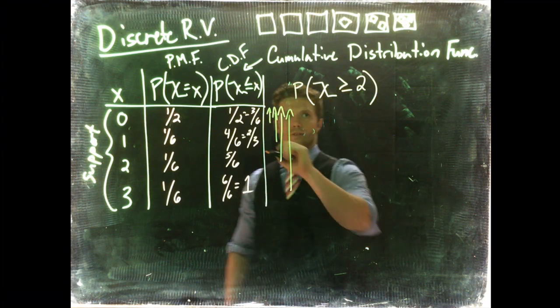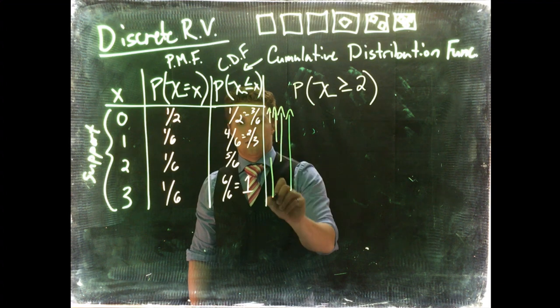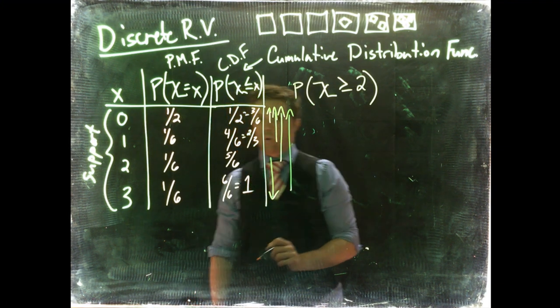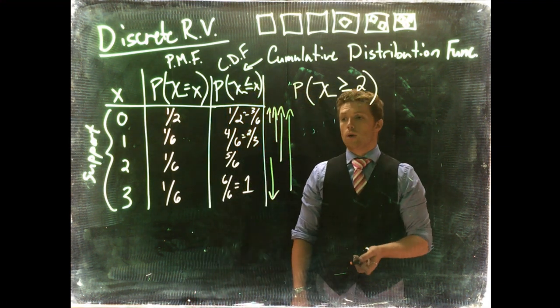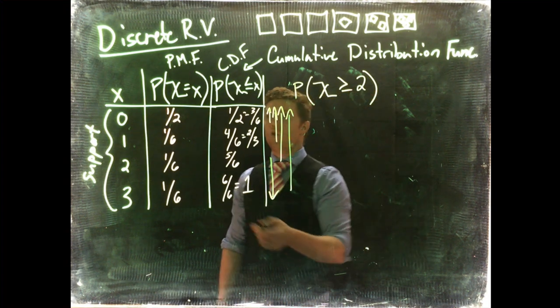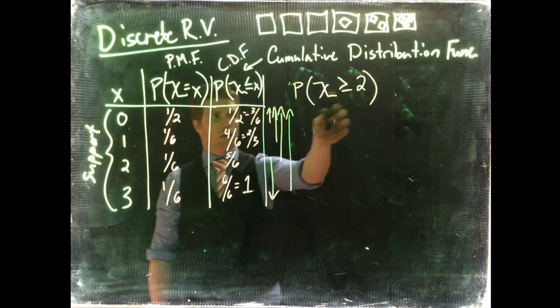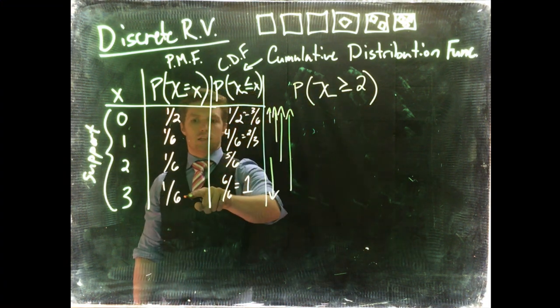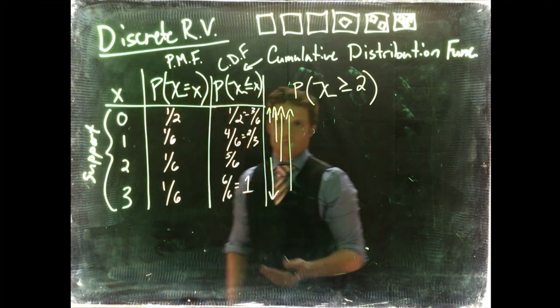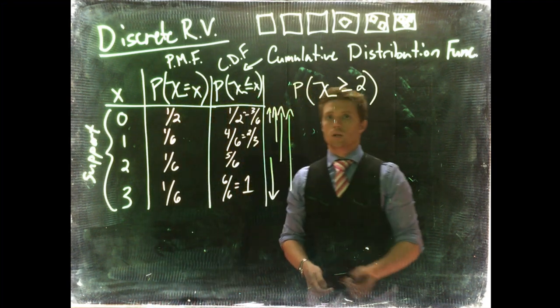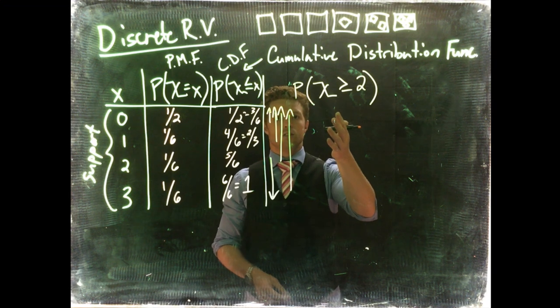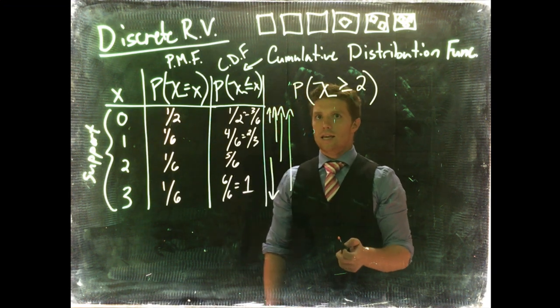But here it's saying, okay, what is the probability of being an X, a number 2, or greater? All right, there's a couple ways we could do this. We could literally just go over to the PMF and calculate, okay, it could be equal to 2 or it could be greater than 2, so it's going to be 1 third. Okay, so that's one way to do it, or we can translate this into terms of our CDF.